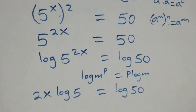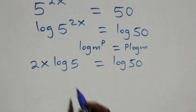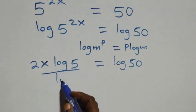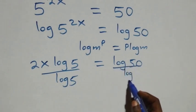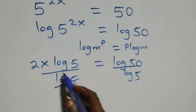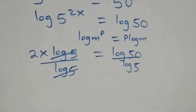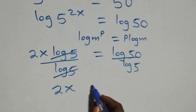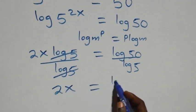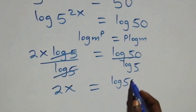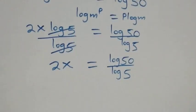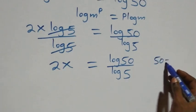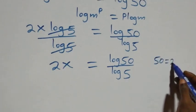The next step: divide both sides by log 5. Log 5 cancels on the left side, and we are left with 2x equals log 50 over log 5. We can then express 50 as 25 times 2.